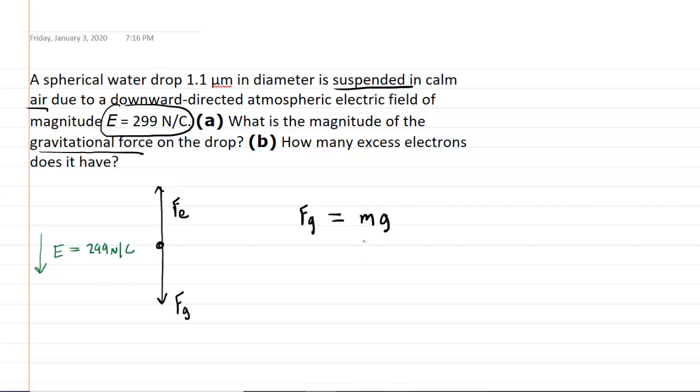The problem here is we don't have the mass of the spherical water droplet. And so, in order to get the mass, it turns out we need to look at the density of the water. So we know density of the water or any object is equal to its mass divided by its volume.